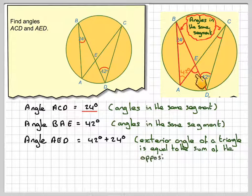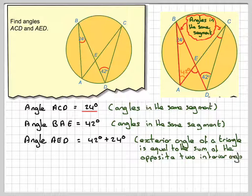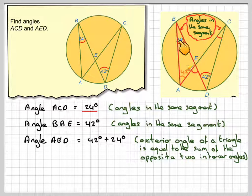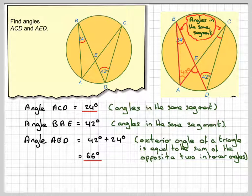If I just repeat that, the exterior angle of a triangle is equal to the sum of the opposite two interior angles of a triangle. So it gives me that this angle here is 66 degrees.